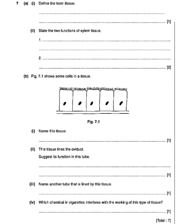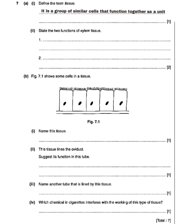Then a collection of tissues is going to form an organ. A collection of organs will form the organ system, and lastly, organ systems form an organism. So a tissue is a group of similar cells that function together as a unit.